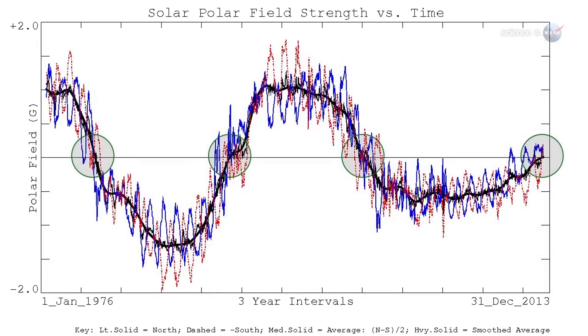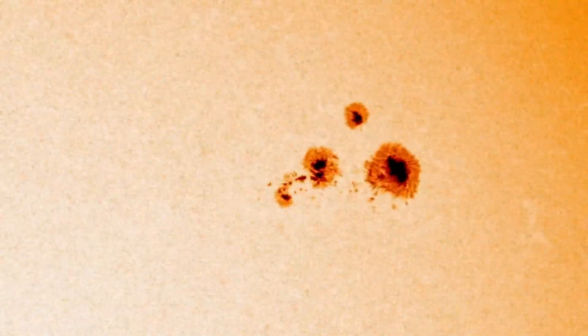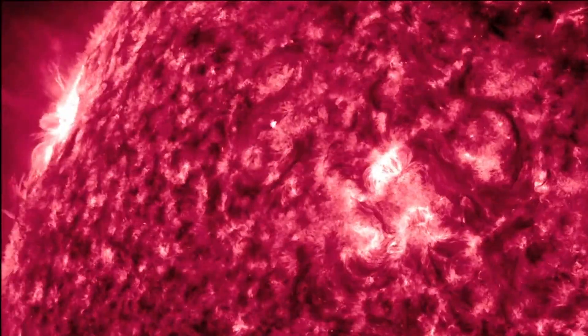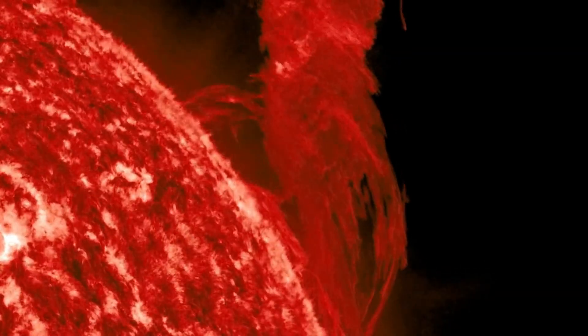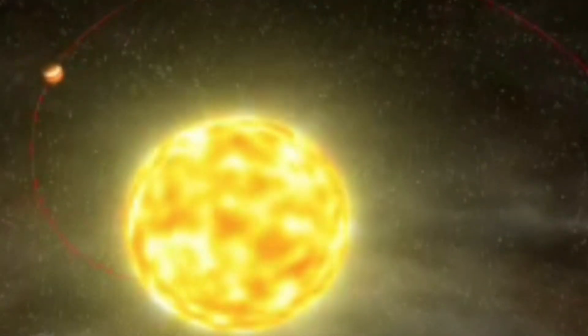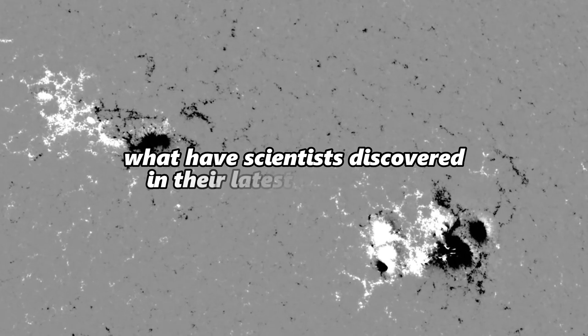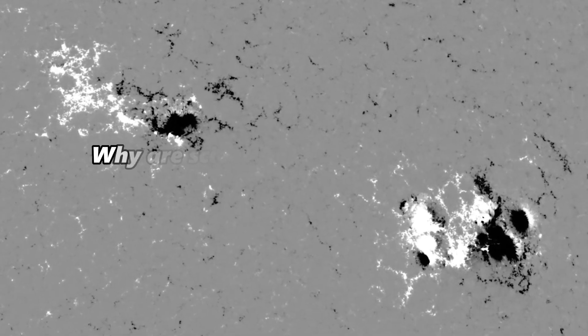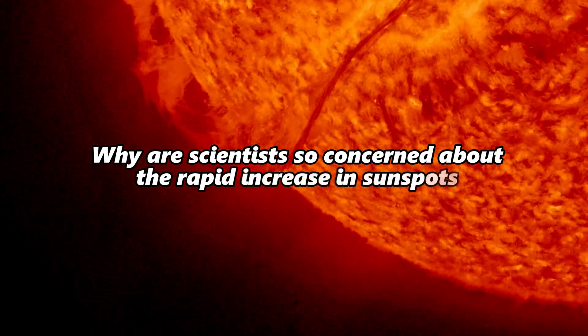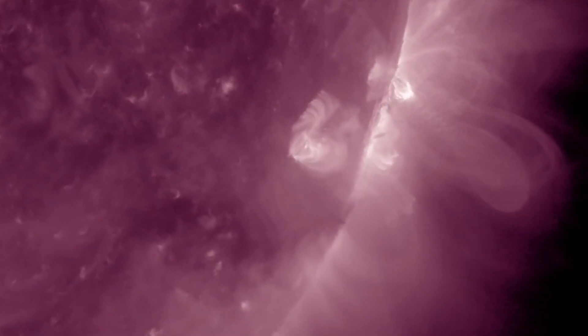New observations have suggested that the number of sunspots on the sun's surface is rising much faster than predicted. And this has worried scientists. Researchers are now claiming that the rapid increase in sunspots is a matter of concern as it could lead to intense solar flares. NASA has predicted that the sun will be more active in the year 2025. And new observations have raised concerns about the impact of solar activity on Earth in the coming days. So, what have scientists discovered in their latest observations? Why are scientists so concerned about the rapid increase in sunspots? And how will powerful solar flares affect Earth in the year 2025?